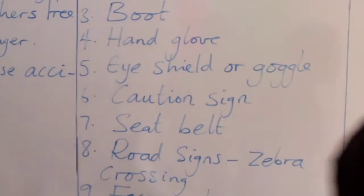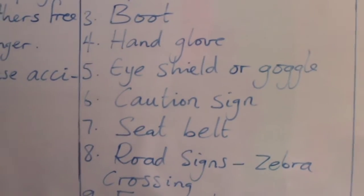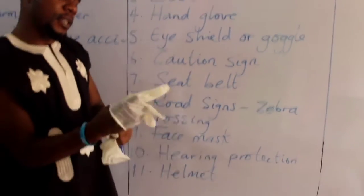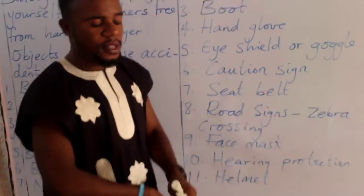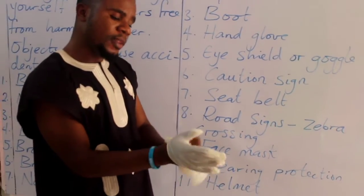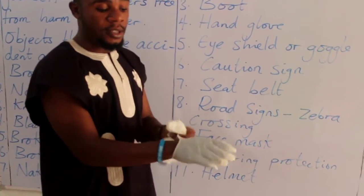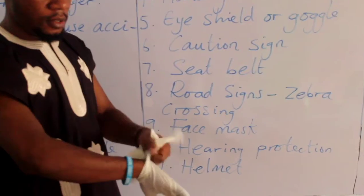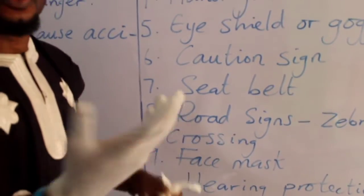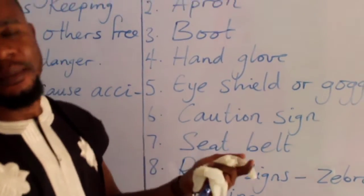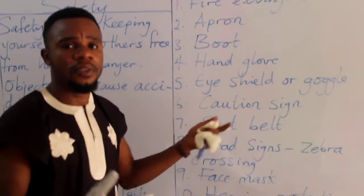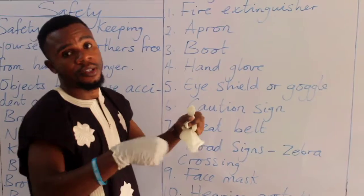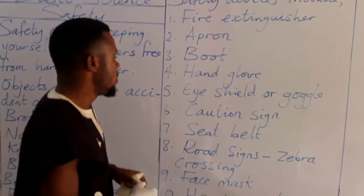We have hand gloves. Hand gloves are very important. Most engineers always put on their hand gloves. This is one example of a hand glove — it is very light and is used by doctors to avoid contact with the body of other persons. Doctors put on this to avoid blood or dangerous things that can harm them, and they wear it during operations or any activity that requires hand gloves.